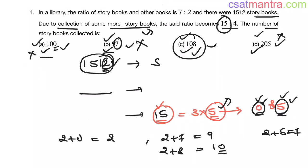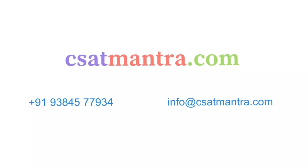This is the beauty of number system. Even if you don't know any concept related to the problem, you can solve it using number system concepts — or at least eliminate 2 to 3 options. Kindly master the number system chapter, because all we are dealing with is numbers, and number system will be of immense help. You can solve 13 to 15 questions just by using number system concepts. To know more about the course, kindly visit csatmantra.com. If you have any queries, feel free to call us or mail us. Thank you.